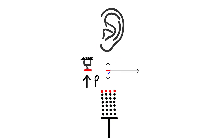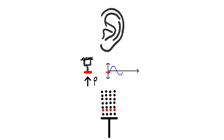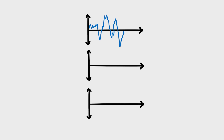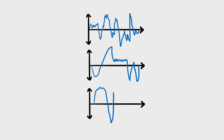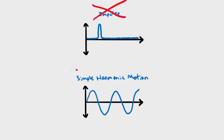Both increases and decreases in pressure are recorded by your ear. Sound waves can be super complex, because talking, music, and other noises are not just an impulse or a consistent oscillation from a single source.